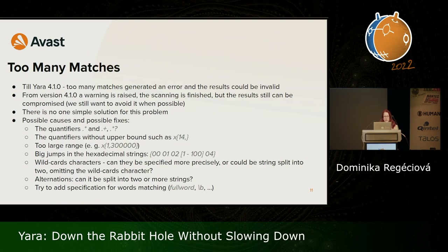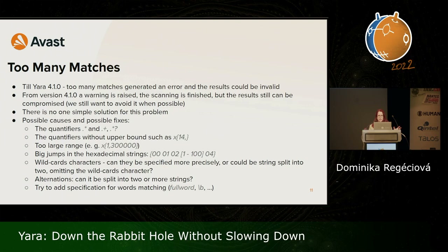YARA unfortunately doesn't work very well with alternations, so even though readability is important, try splitting multiple alternations in one string into separate definitions — you may find that speed actually increases and the rule works better. Also, while I cautioned against options like wide and nocase, some options are actually useful, such as the word modifier, which requires whitespace around the match — this helps YARA eliminate some potential match cases.